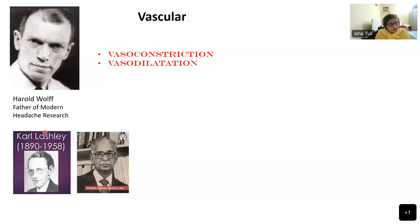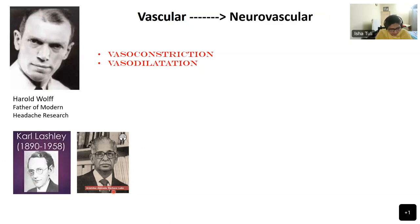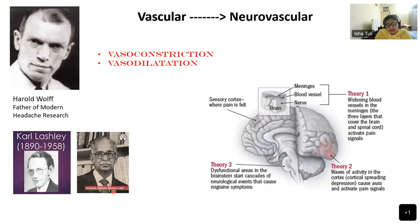Around the same time in the 1940s, Karl Lashley and Aristides Leão were working on visual auras and epilepsy. Karl Lashley suffered from scotomas due to migraine and, together with Leão, proposed the idea of a cortical spreading depression theory in the brain. It took the scientific community many years through their work and the works of various other researchers to accept this neurovascular basis of brain pain.